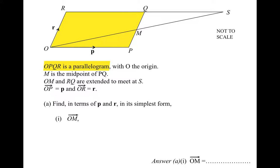First it says OPQR is a parallelogram, so the points O, P, Q and R join together to form a parallelogram with two pairs of parallel sides. O is the origin, so imagine there are X and Y axes there. O would be the point (0,0), the origin.